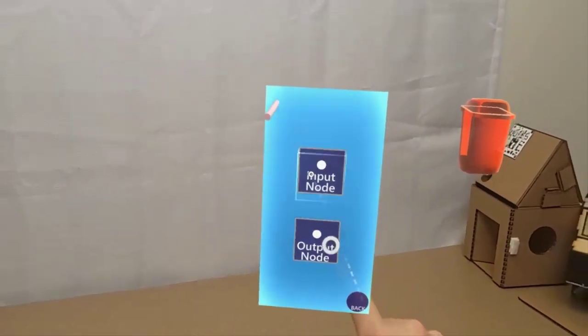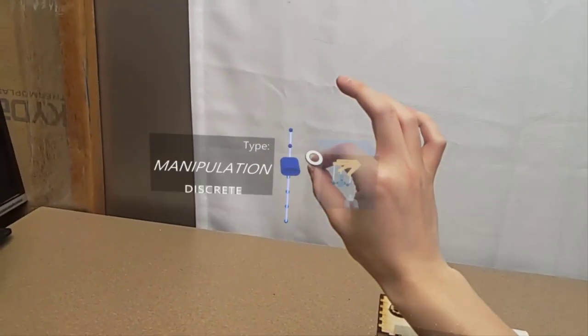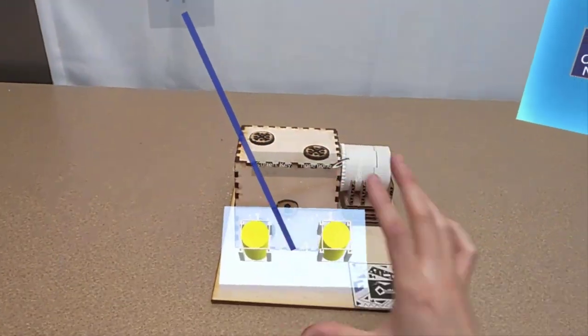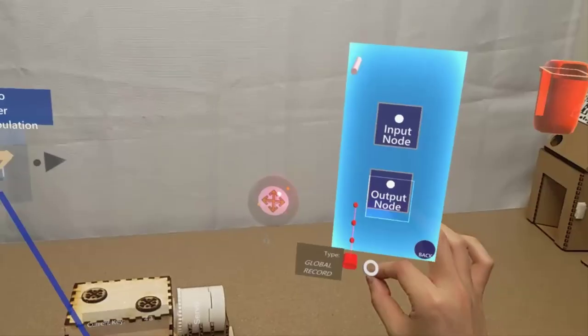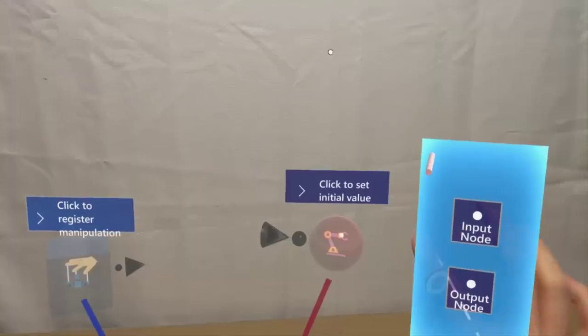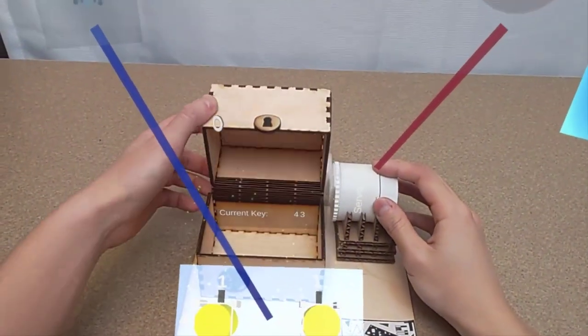In edit mode, the user selects discrete manipulation of the virtual lock as input and sets it to the right location. Then, the user selects local movement as output and demonstrates the opening action of the chest.